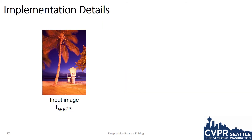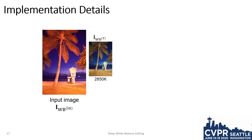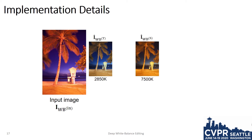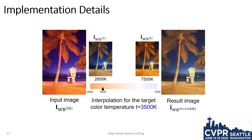In our implementation, we train three decoders: one decoder for auto white balance, another decoder for incandescent — also referred to as tungsten white balance — that has a color temperature of approximately 3000 Kelvin, and a decoder for shade white balance that has a color temperature of 7500 Kelvin. To produce images with other color temperatures, we simply blend between the outputs of the incandescent and shade white balance.